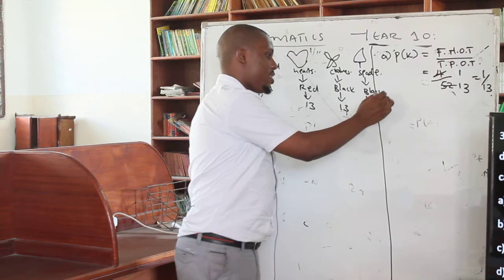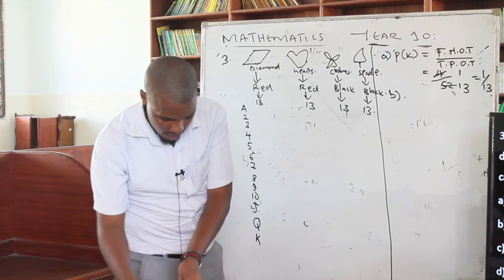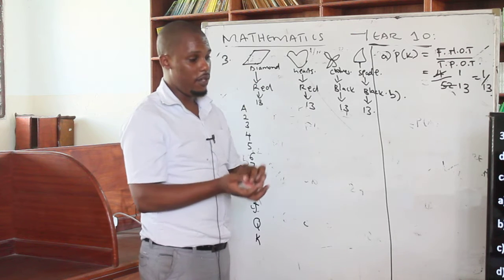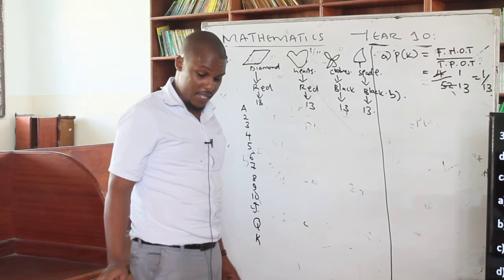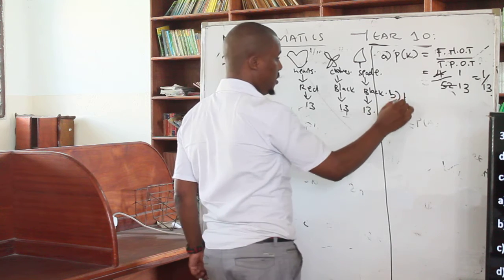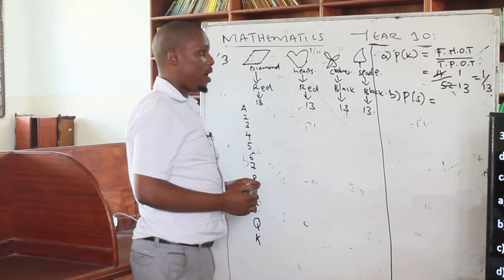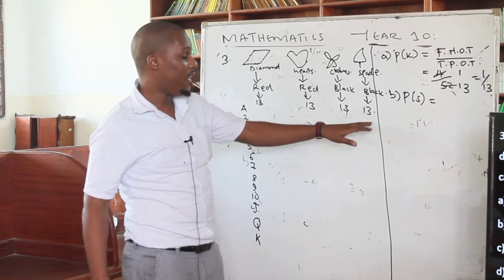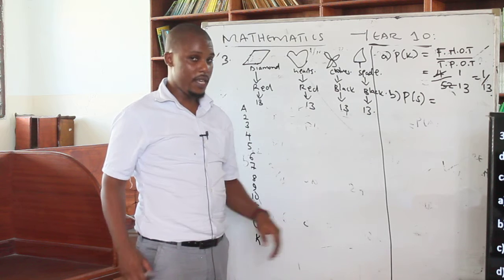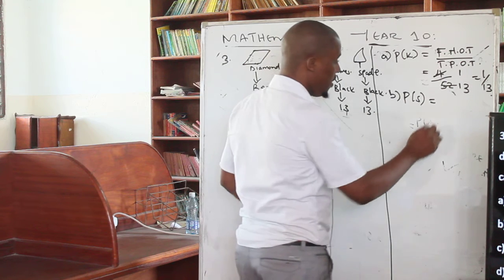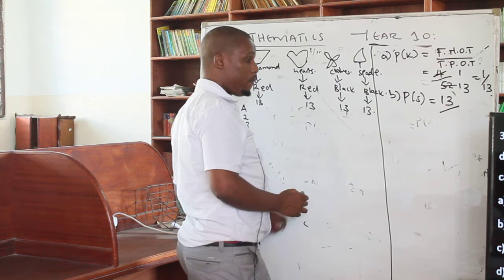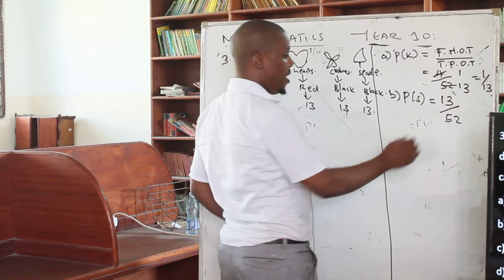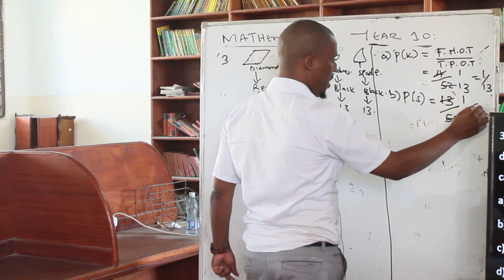In part B, we are asked: what is the probability of getting a spade after shuffling? There are 13 spades in the pack. So the probability is 13 over 52, which simplifies by dividing both by 13 to give 1 over 4.